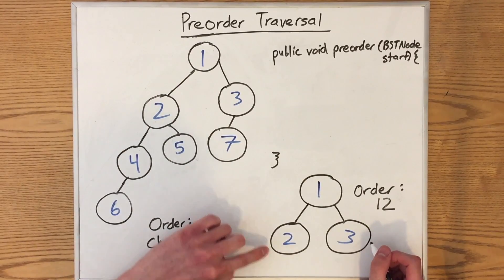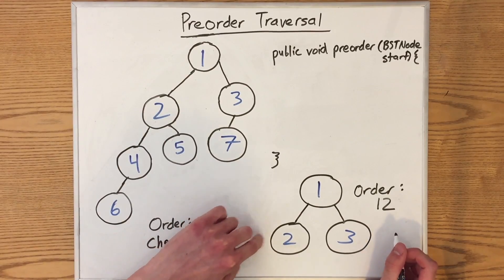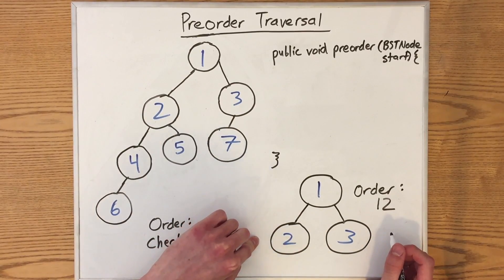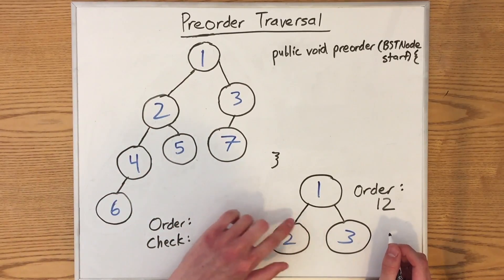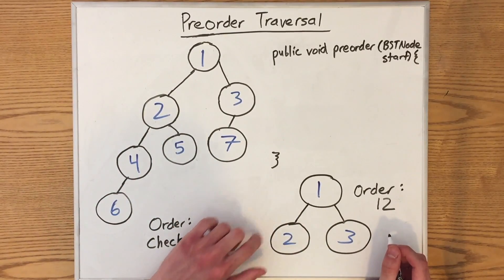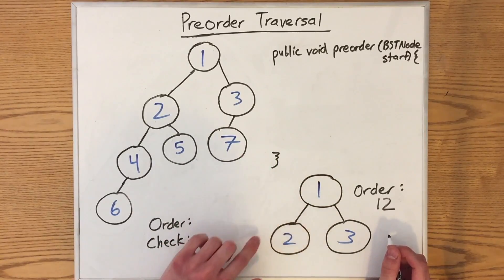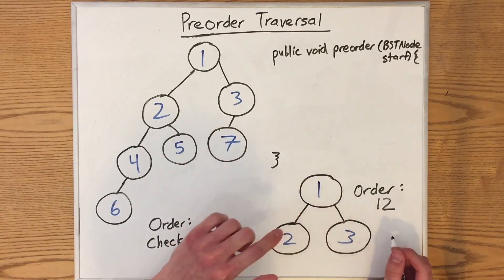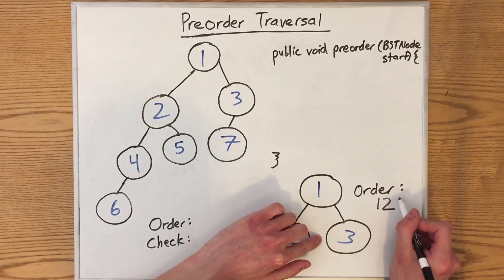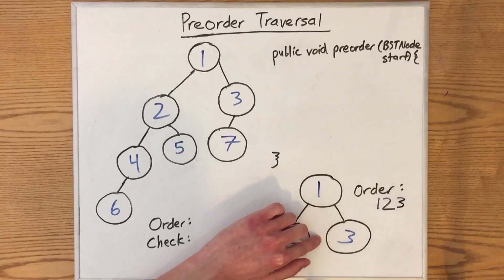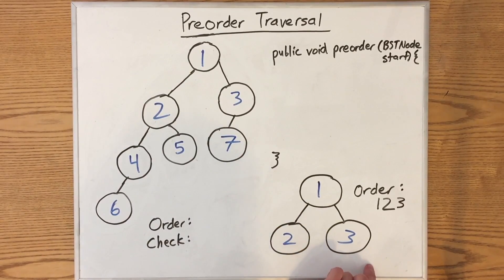But it doesn't have a left subtree since it's a leaf node. So then we repeat the process on its right subtree, but it also doesn't have a right subtree because it's a leaf. So we finished processing this entire left subtree. So this node's left subtree is now complete. Then we go into this node's right subtree. We treat this as its own tree, print out its root value.